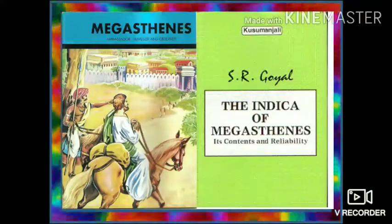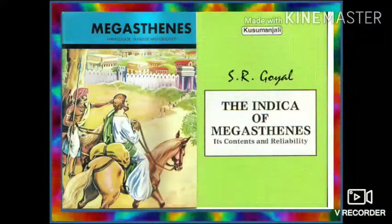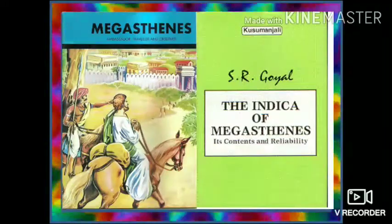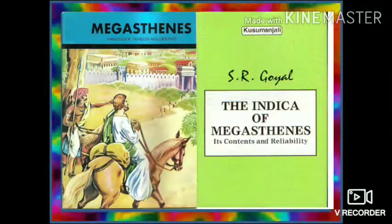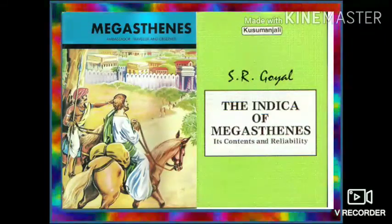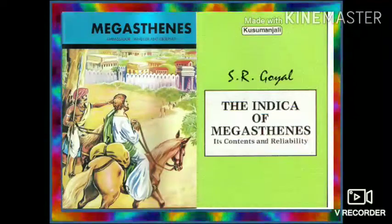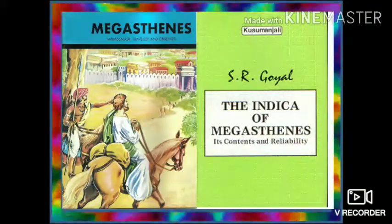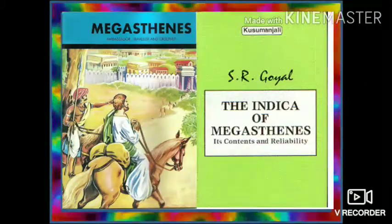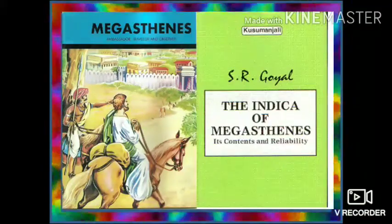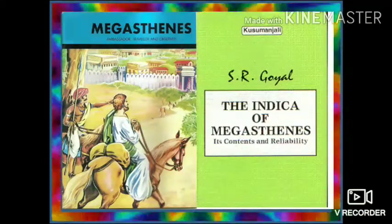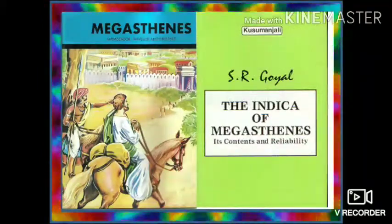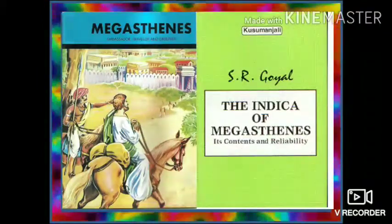Megasthenes mentioned the following things: India is a quadrilateral shaped country, bounded by the ocean on the southern and eastern side. India has many large and navigable rivers which arise in the mountains on its northern border. Gold, silver, copper and iron are abundant on Indian soil.